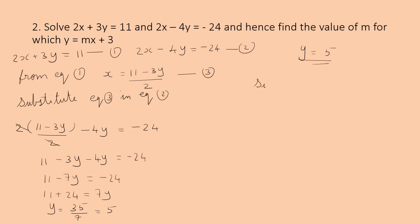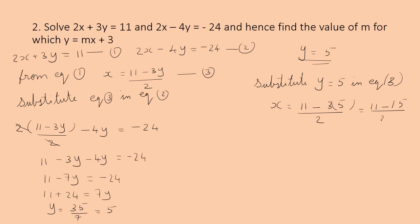Substitute y = 5 in equation 3: x = (11 − 3×5)/2 = (11 − 15)/2 = −4/2 = −2. Therefore x = −2. The solution is x = −2 and y = 5.